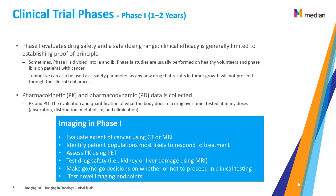Pharmacokinetic, or PK, and pharmacodynamic, or PD, data is collected. PK and PD gives the evaluation and quantification of what the body does to a drug over time, tested at many doses: absorption, distribution, metabolism, and elimination. Imaging is used to evaluate the extent of cancer using CT or MRI, identify patient populations most likely to respond to treatment, assess PK using PET, test drug safety — for example, does the drug cause kidney or liver damage using MRI — make go/no-go decisions on whether or not to proceed in clinical testing, and to test novel imaging endpoints.